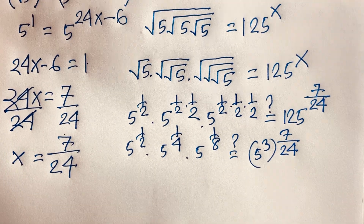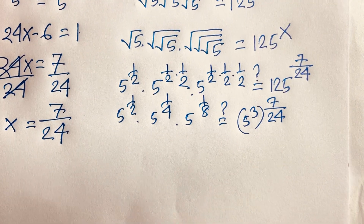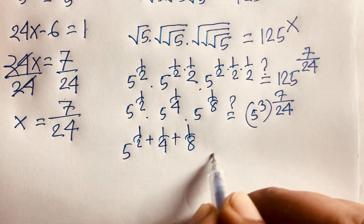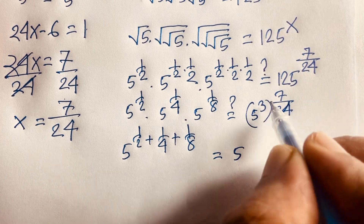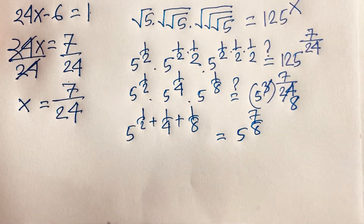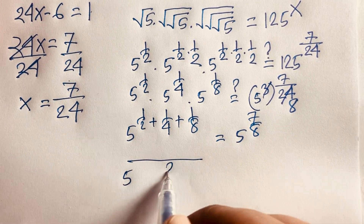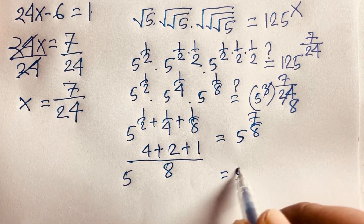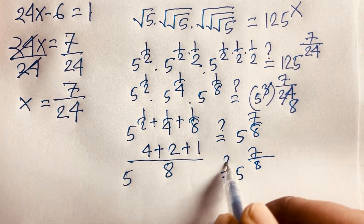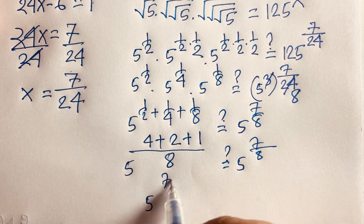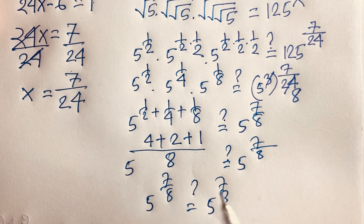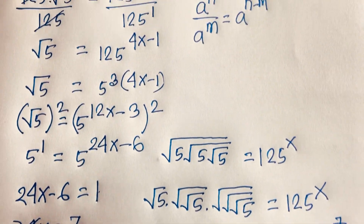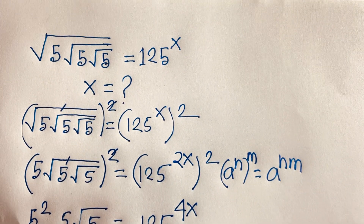So 5 to the power (1/2 + 1/4 + 1/8). The least common denominator is 8, giving (4 + 2 + 1) over 8, which equals 5 to the power 7/8. On the right side, 5 to the power 3 times 7/24 equals 5 to the power 7/8. So 5^(7/8) equals 5^(7/8), confirming x equals 7 over 24 is our final answer.